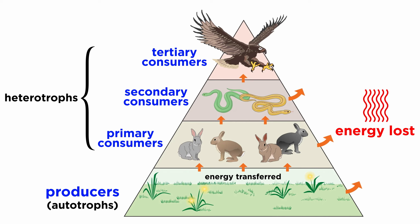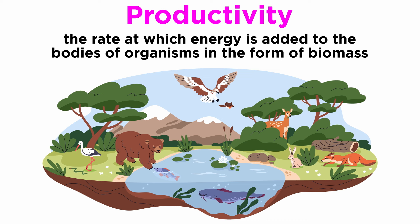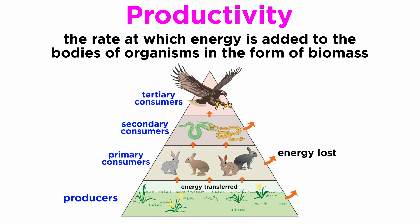That's because energy isn't recycled. Instead, it's dissipated as heat as it moves through the ecosystem, and must be constantly replenished. In ecology, productivity is the rate at which energy is added to the bodies of organisms in the form of biomass. Biomass is simply the amount of matter stored in the bodies of a group of organisms. Productivity can be defined for any trophic level, or other group, and it may take units of either energy or mass.